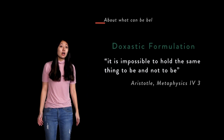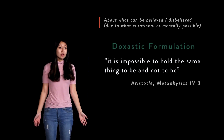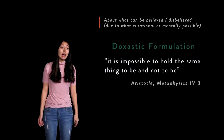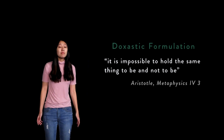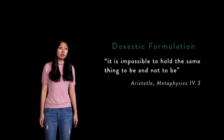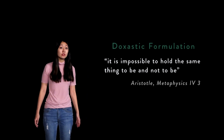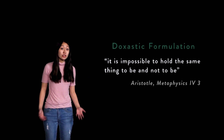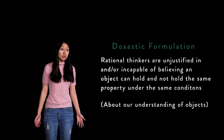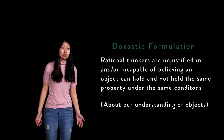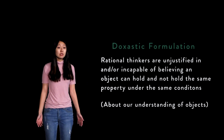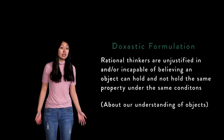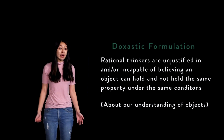The doxastic formulation: 'doxastic' means of or relating to belief or opinion. The second version of the principle can be interpreted in either of two ways: first, as a statement about the psychological capabilities of the mind, or second, as a declaration of what it is rational to believe in general. While the metaphysical formulation purports that it is impossible for objects themselves to hold and not hold the same property under the same conditions, this doxastic formulation concerns whether we, as rational thinkers, are ever justified to — or even able to — believe that the same object can hold and not hold the same property under the same conditions. More simply, the metaphysical formulation deals with how an object actually is, while the doxastic formulation deals with how we can and should understand the object.